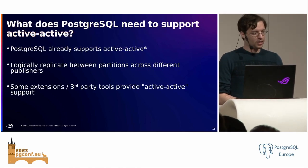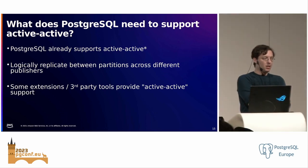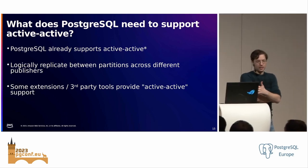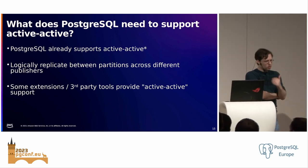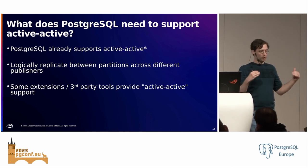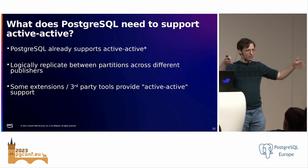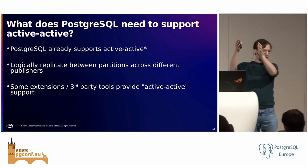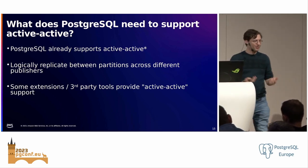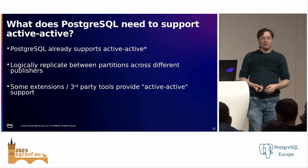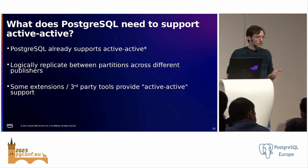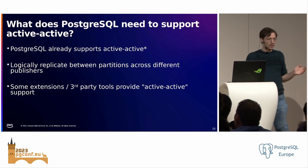What does Postgres need to support active-active? Actually, Postgres already supports active-active — with an asterisk. When logical replication was added, both publisher and subscriber had to be writer instances. You can set up partitioned tables and bidirectionally replicate partitions between instances. I tried this and wrote a blog post about it — while it works and you can write without conflicts, it's a pain to manage. There are also many third-party tools and extensions that provide active-active support for Postgres.